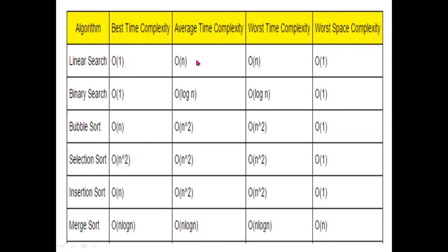Friends, first of all, for linear search: best case, average case, and worst case. I'm going to explain it my own way of explanation.